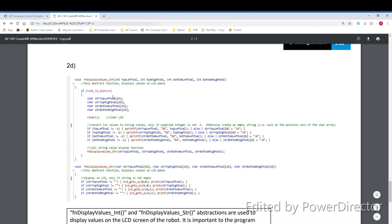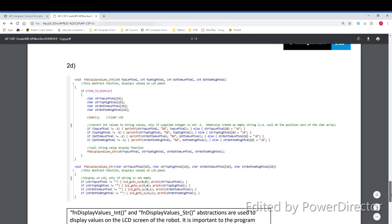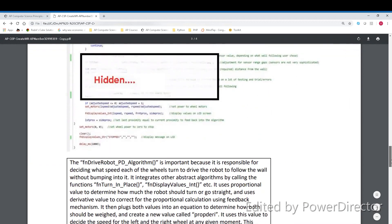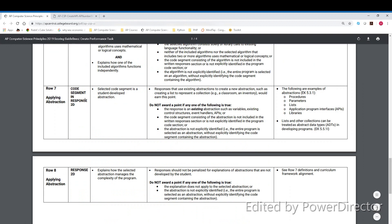This would be an example of abstraction, and I'd get a point for row 7 for applying abstractions.